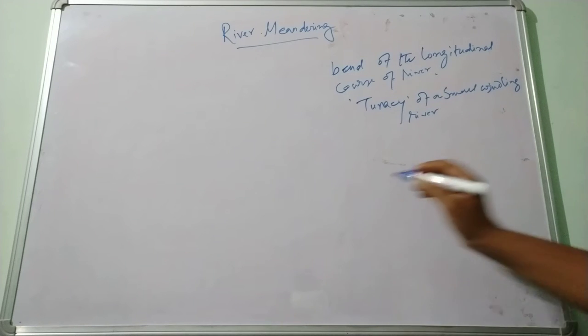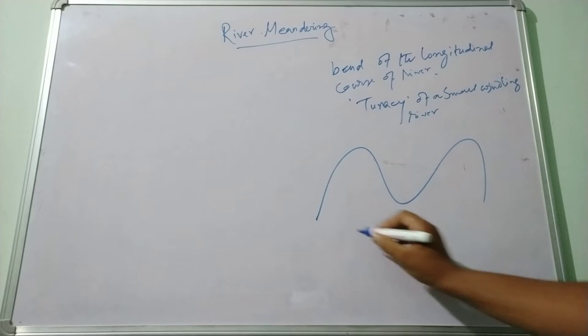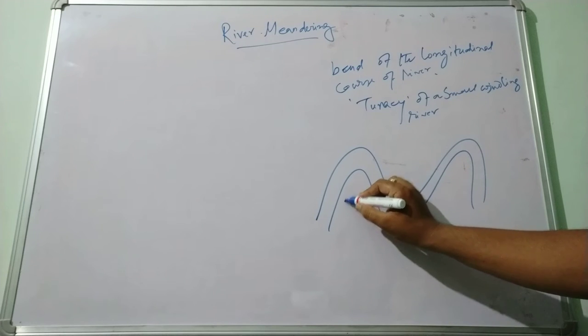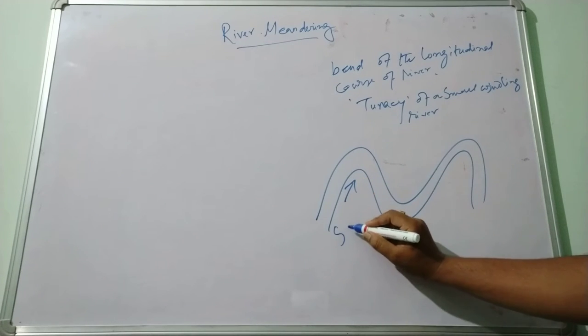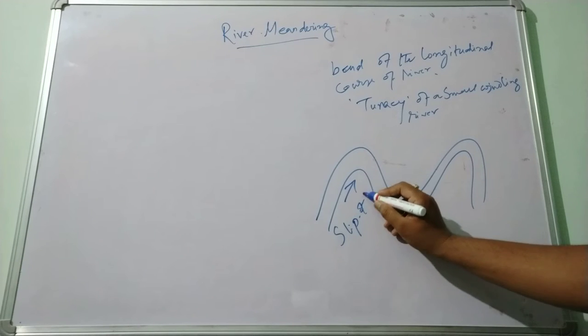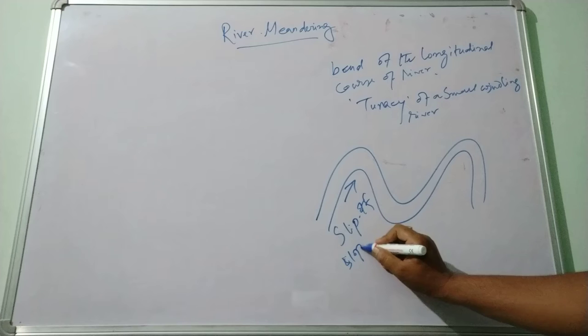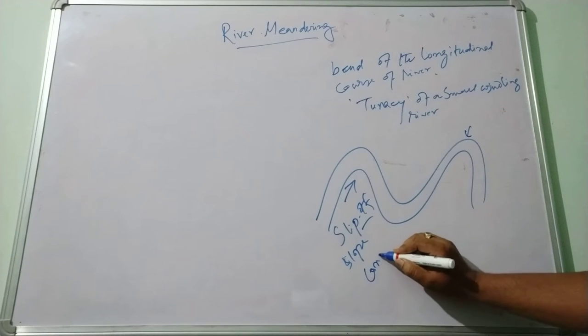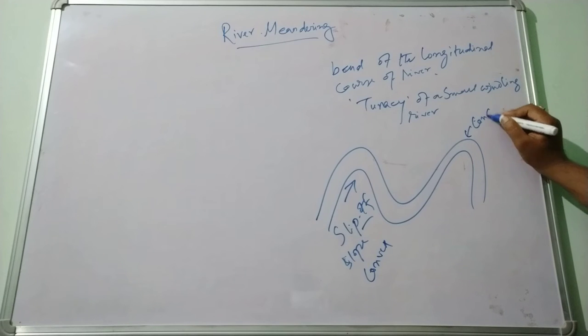So each meandering has two types of slope. This is the slip-off slope which is especially associated with deposition, also known as the convex slope. And this is the concave slope or cut bank, associated with erosion.